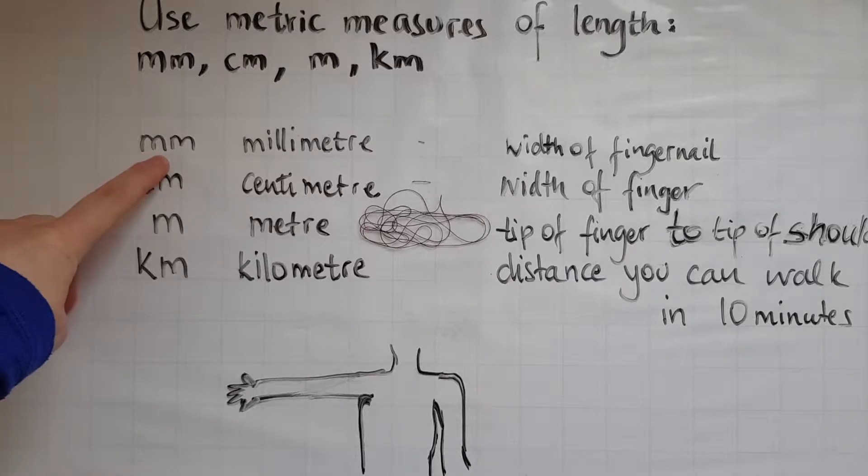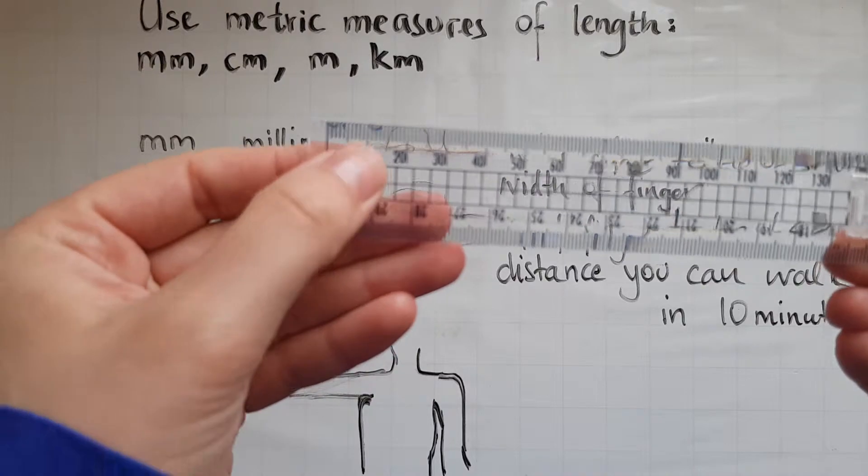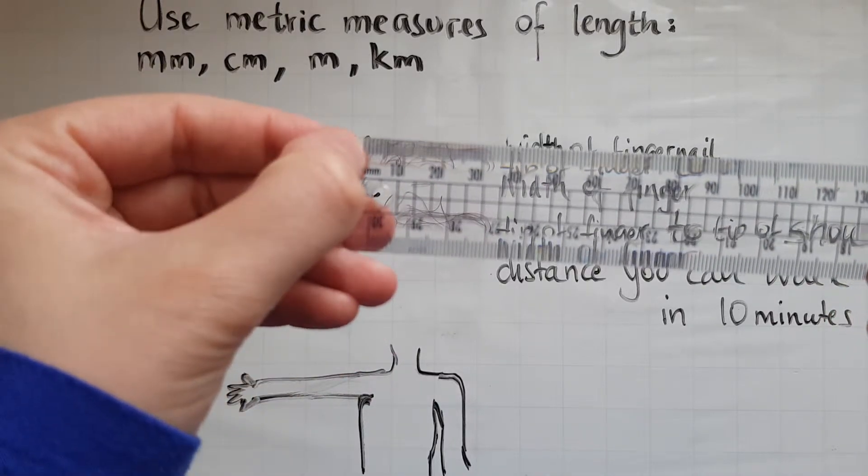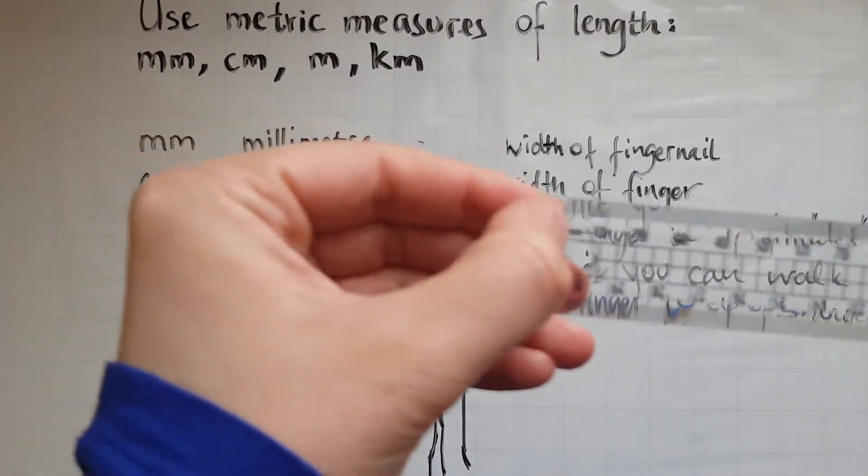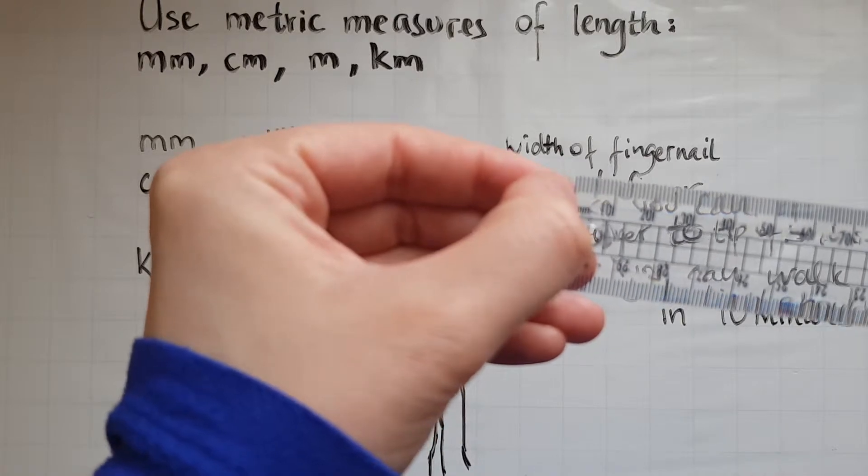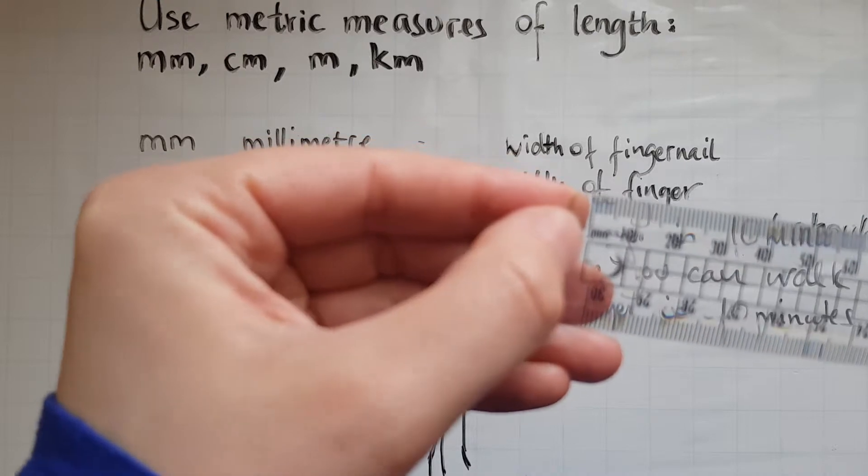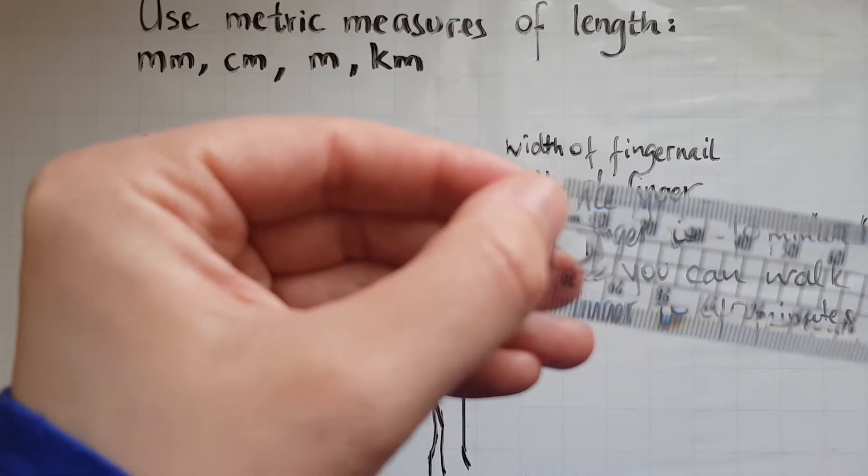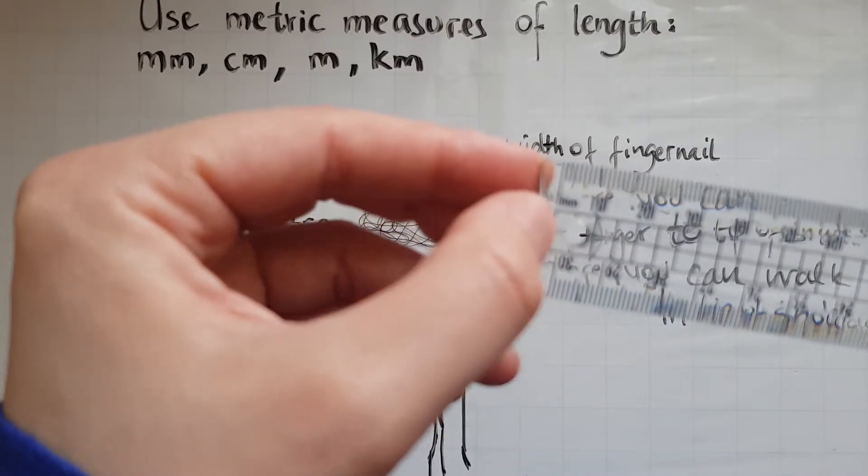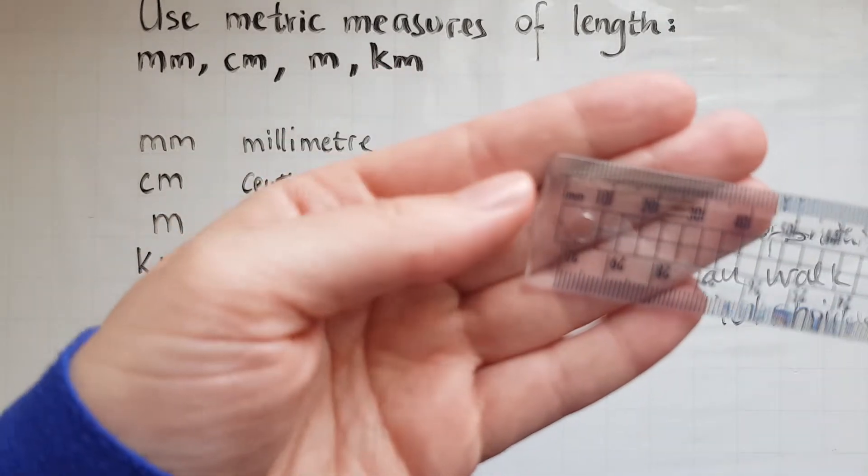Millimeter is a really tiny short length. Looking at a ruler, millimeters are represented by these very small lines. As you can see, they are rather tiny and every ruler has them.